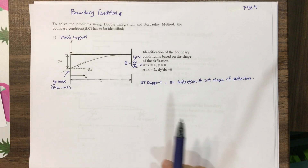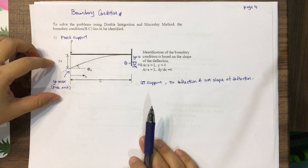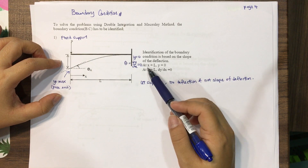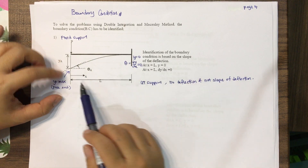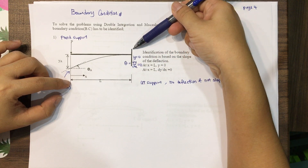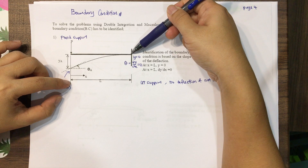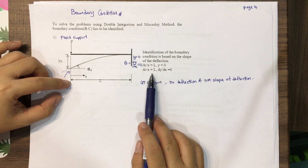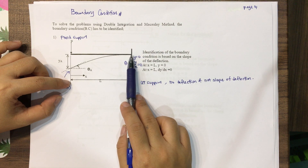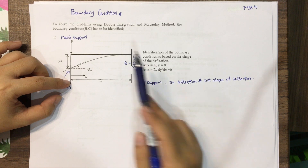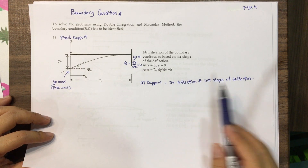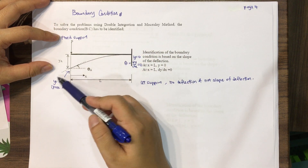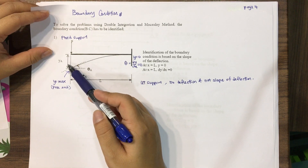Now I will explain the boundary conditions. For a fixed-and-free end support condition: at x equal to L, which is the fixed support location, y is equal to zero — there is no deflection because it is fixed. Also at x equal to L, dy/dx equals zero — there is no slope. At the free end, the maximum deflection y_max occurs.